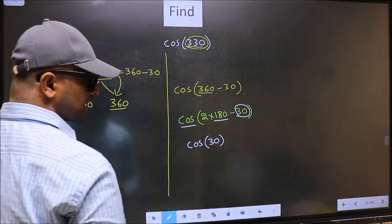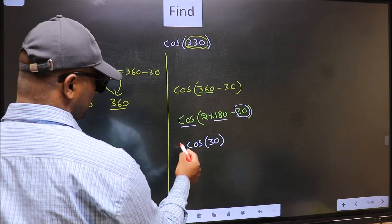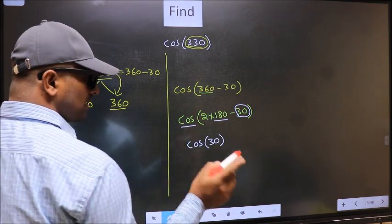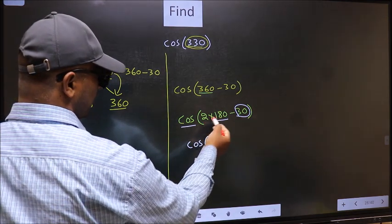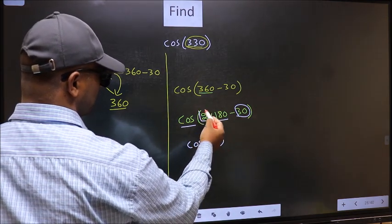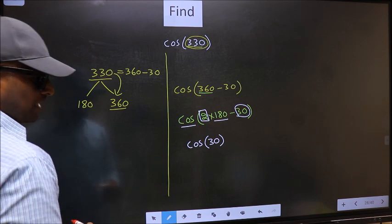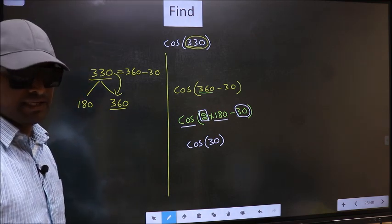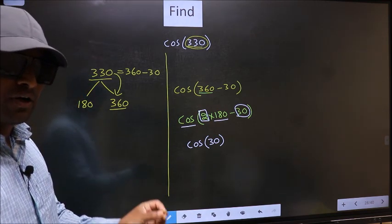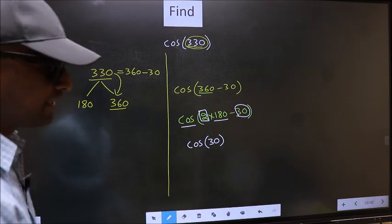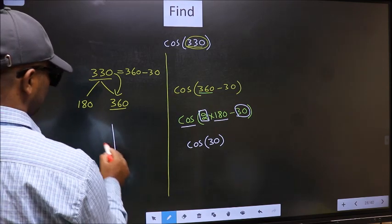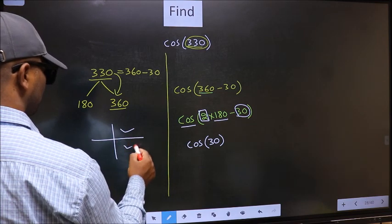Now the question is, will we get here plus or minus? To answer that, we should look at the number before 180. That is 2. And 2 is even. And all the even multiples of 180, they lie in either the first or the fourth quadrant.